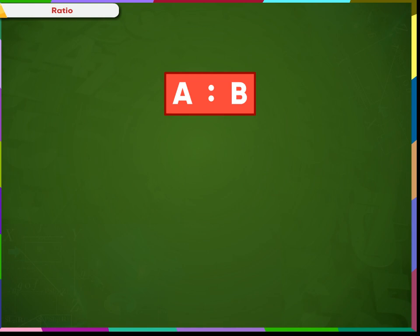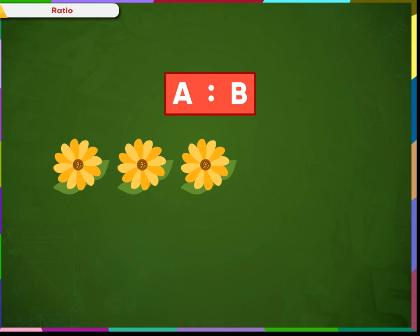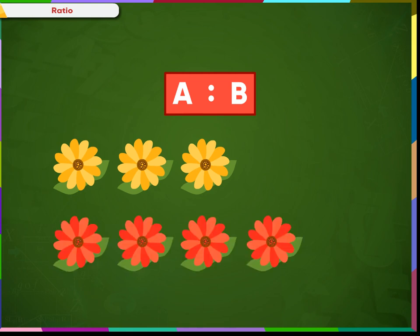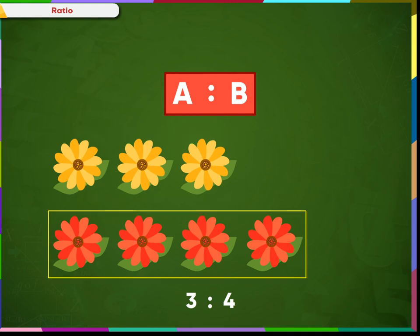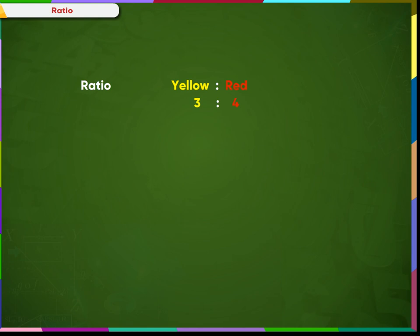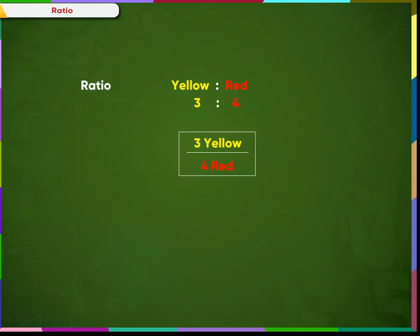Ratio is represented using this symbol. For example, the ratio of yellow flowers to red flowers is 3 is to 4 — 3 yellow flowers and 4 red flowers. When we want to represent this ratio in division form, we write 3 yellow flowers by 4 red flowers. So these are just two different ways to write a ratio.